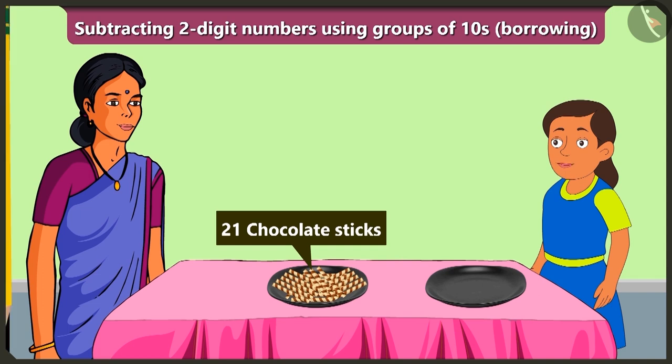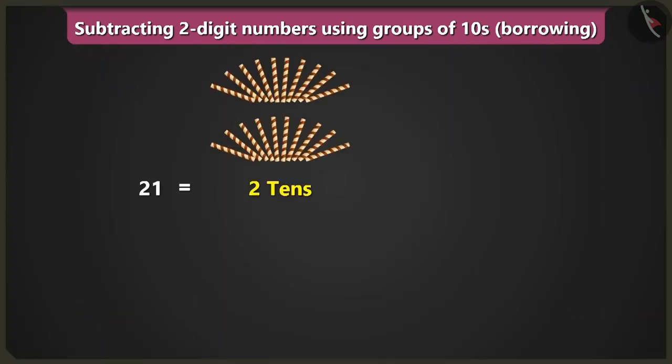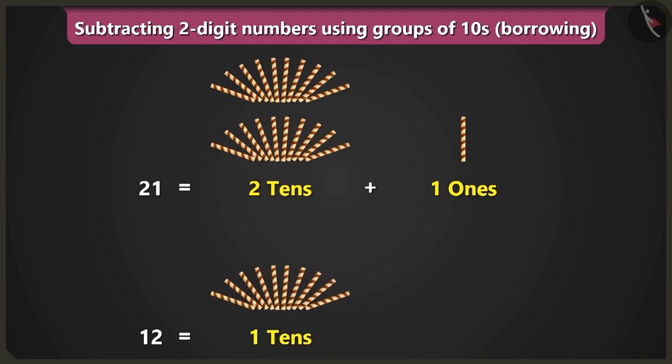So to know this, we will have to minus from two tens and one ones, twelve, which is one ten and two ones.